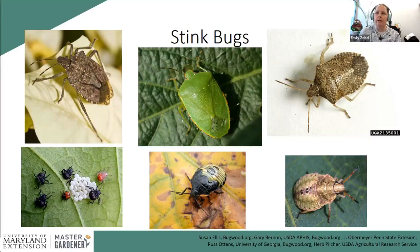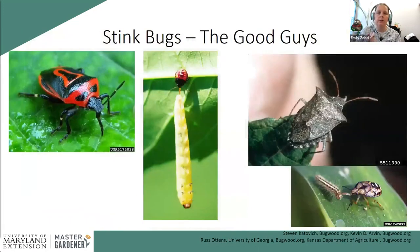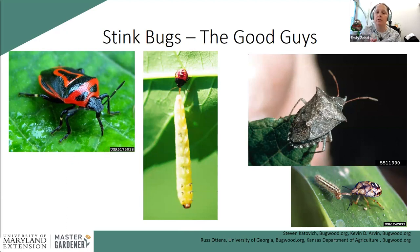Stink bugs are probably the biggest concern for tomatoes. There are several species: the brown marmorated stink bug, the native brown stink bug, and the southern green stink bug. It's worth noting that not all stink bugs are bad — we have predatory ones, like the two-spotted stink bug and the spined soldier bug, which will prey on caterpillars and other pest insects. If you come across an insect you don't recognize, get a clear photo and submit it to Ask Extension or use Google image search.